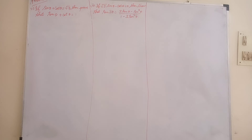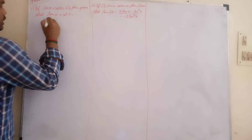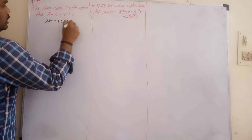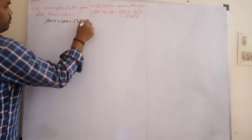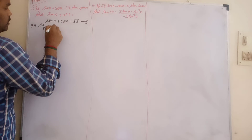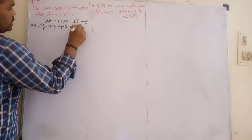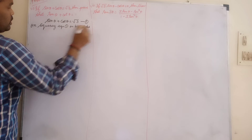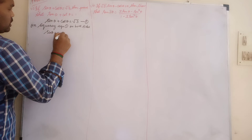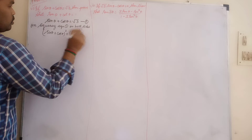So, how we are going to express this equation and prove it. sin θ + cos θ = √3. I am squaring equation 1 on both sides: sin θ + cos θ whole square equals √3 whole square.